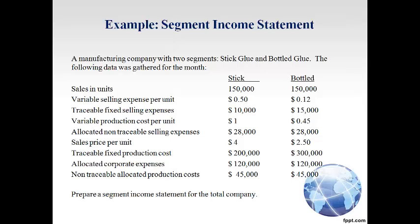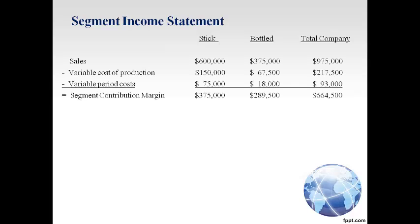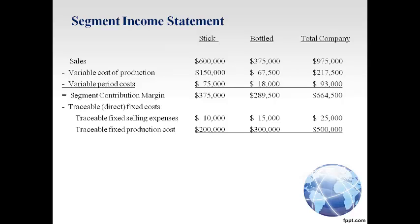Let's walk through an example of how to prepare a segment income statement. Each product is considered a segment. You should notice the sales price, variable cost, and traceable or direct costs, which will be reported in each segment column. The allocated or non-traceable corporate costs will only be reported in the total column. The segment income statement has a column for each segment and a total column. Sales and variable costs are stated in the segment columns, and total amounts for each segment are the amount per unit multiplied by units sold. The next step is to state the traceable or direct fixed costs in each segment.